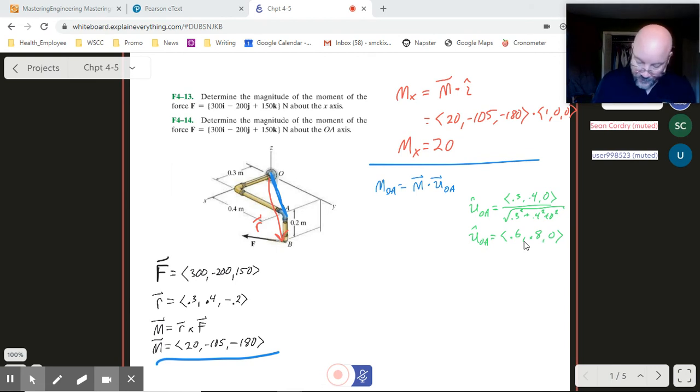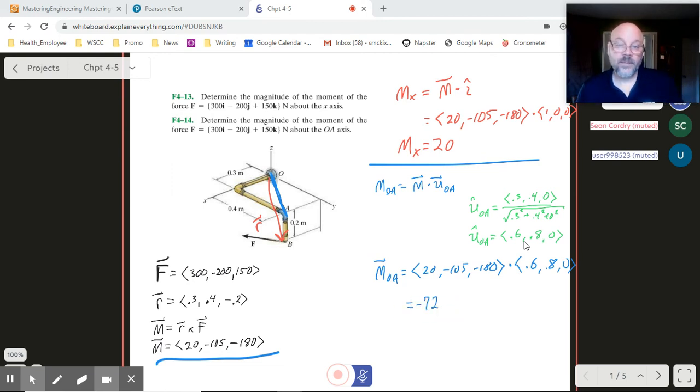Then I'm going to do my dot product. So we're going to have our MOA. And we're going to dot that. It's 20, minus 105, minus 180. I'm going to dot that with 0.6, 0.8, 0. And what pops out of there is negative 72. All right. So that's how much of the moment is along the line OA.